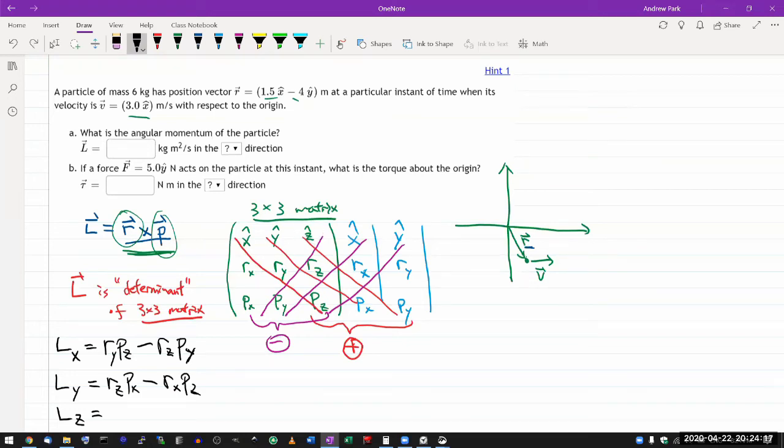The positive one is one that's going to the right downward. So rx py minus ry px.